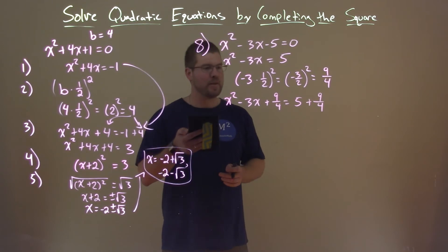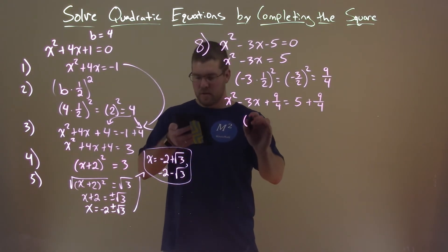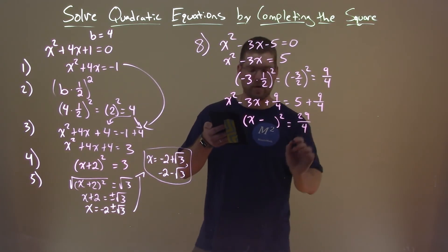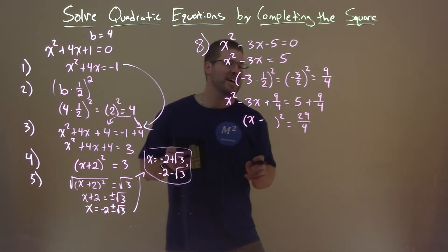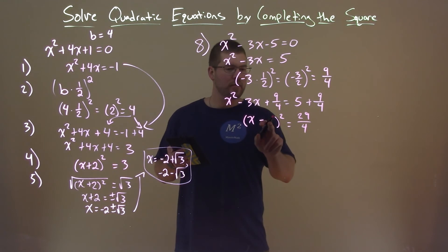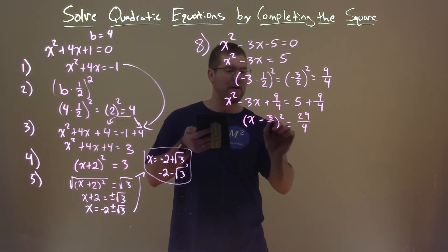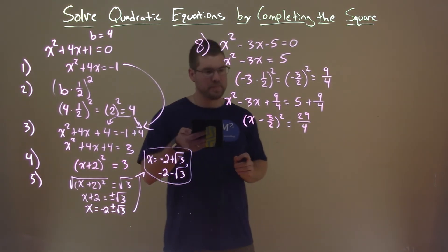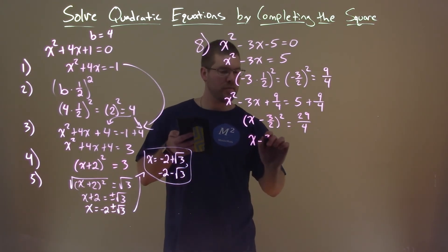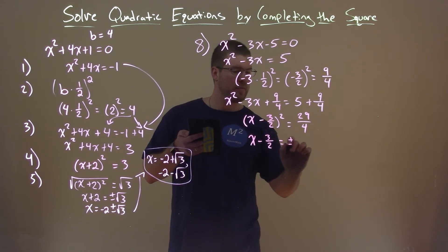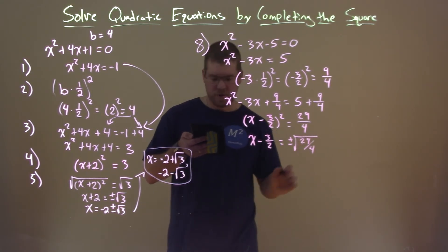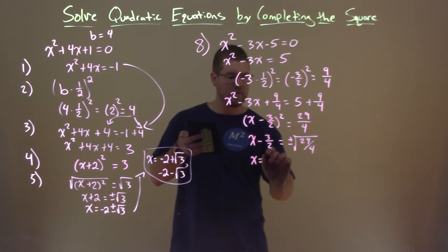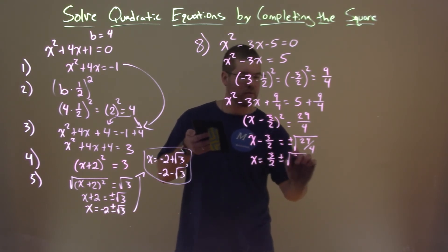This one is a bit tricky. Watch this: the left side factors as x minus 3 halves squared equals 5 plus 9 fourths, which is 29 fourths. Two numbers that multiply to 9 fourths and add to negative 3 are negative 3 halves. Taking the square root of both sides gives x minus 3 halves equals plus or minus the square root of 29 over 4. Adding 3 halves to both sides: x equals 3 halves plus or minus the square root of 29 over 4.